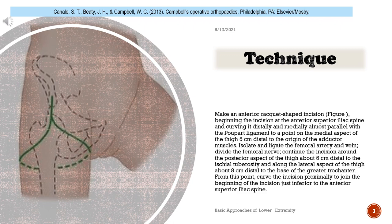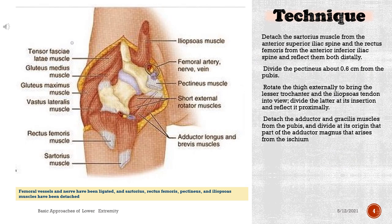Continue the incision around the posterior aspect of the thigh about 5 cm distal to the ischial tuberosity and along the lateral aspect of the thigh about 8 cm distal to the base of the greater trochanter. From this point, curve the incision proximally to join the beginning of the incision just inferior to the anterior superior iliac spine. Detach the sartorius muscle from the anterior superior iliac spine and the rectus femoris from the anterior inferior iliac spine and reflect them both distally.